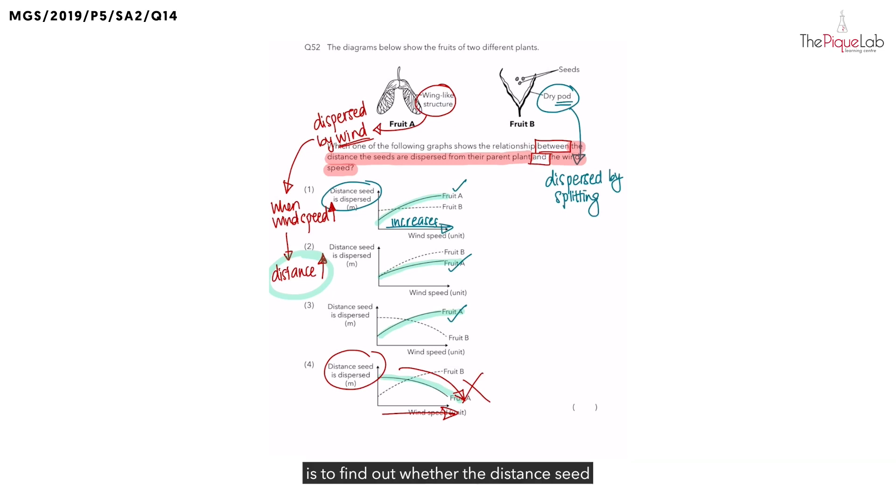So what we got to do now is to find out whether the distance seed of fruit B is dispersed is affected by wind speed. First of all, what's the dispersal method of fruit B? It is by splitting. Does wind speed affect the distance this fruit disperses? No. Splitting occurs when the fruit is ripe, the fruit will split open.